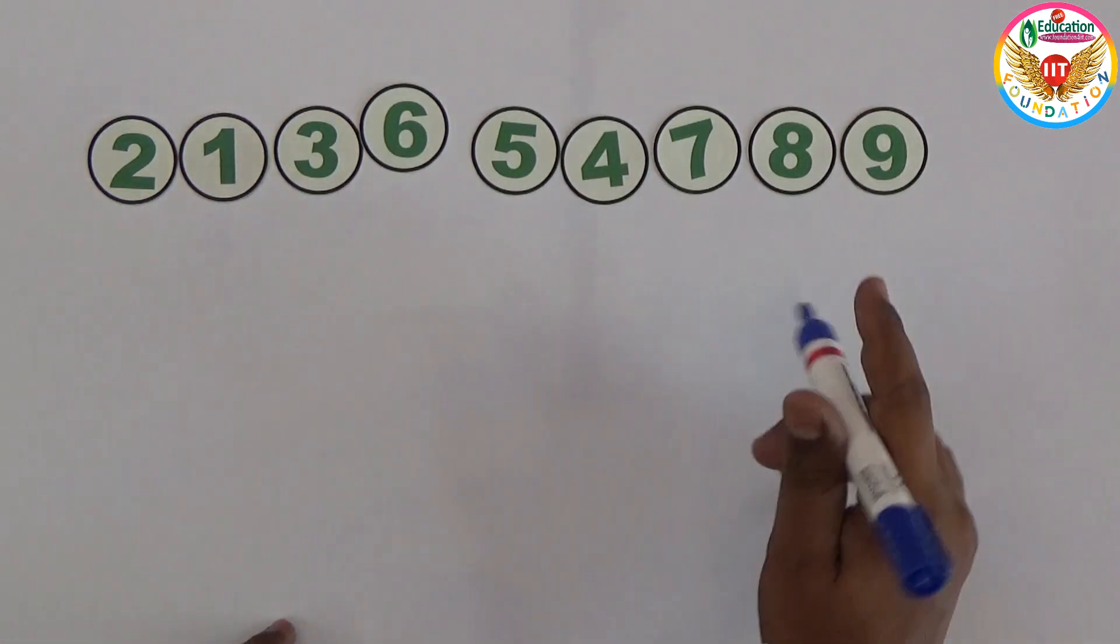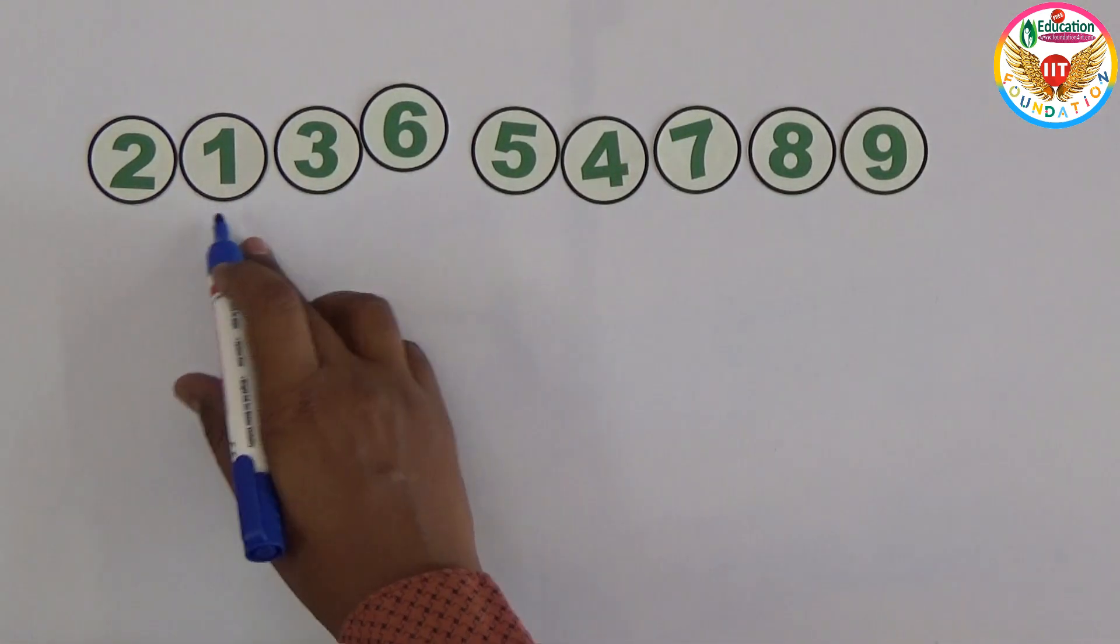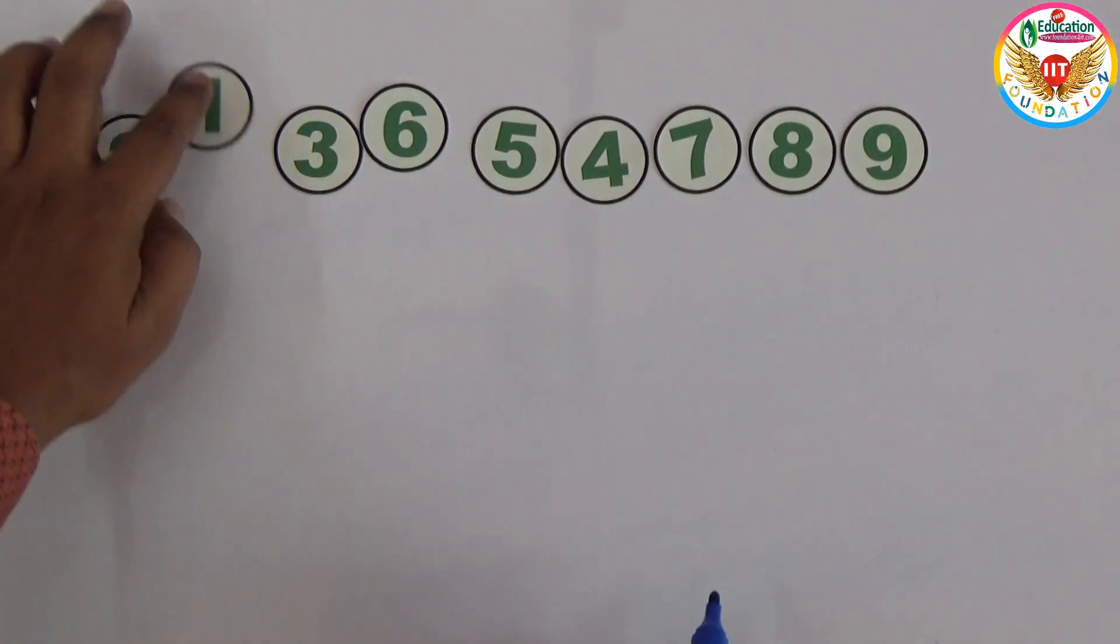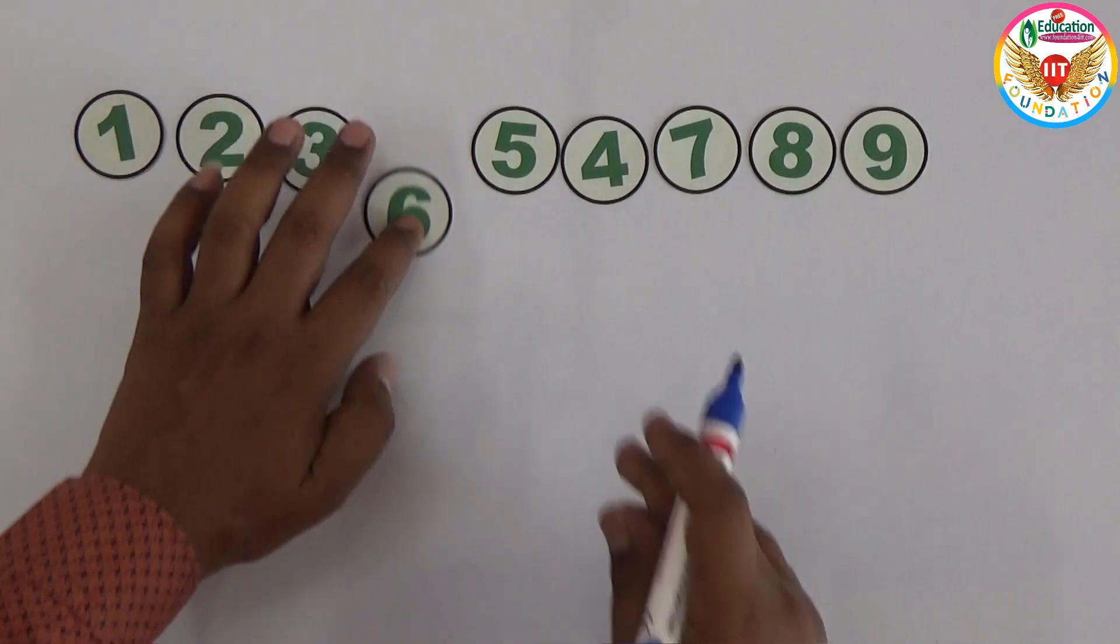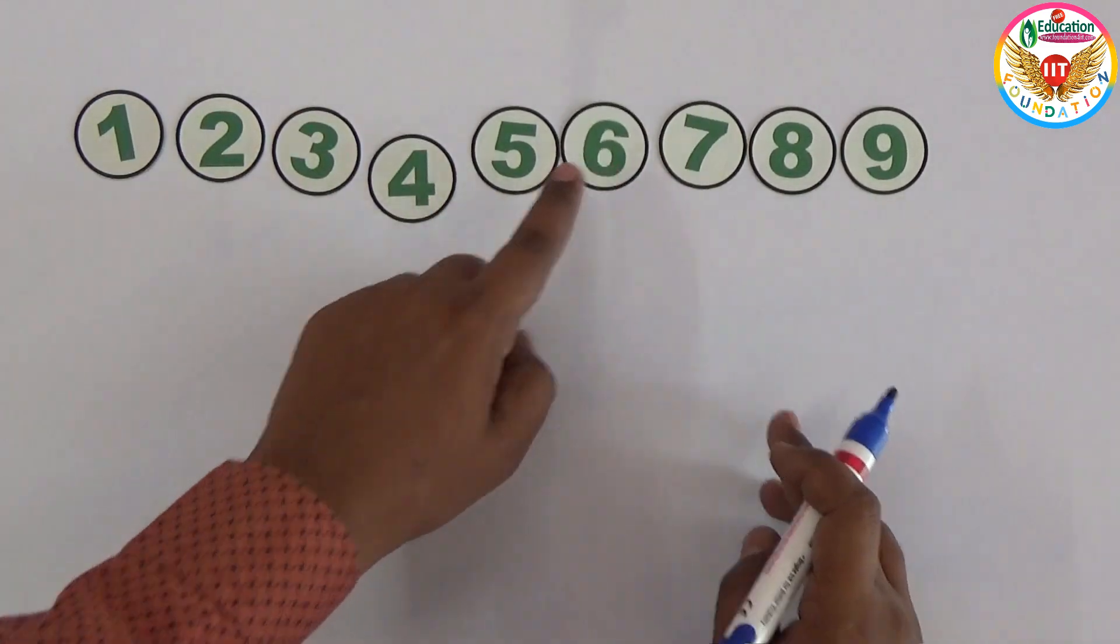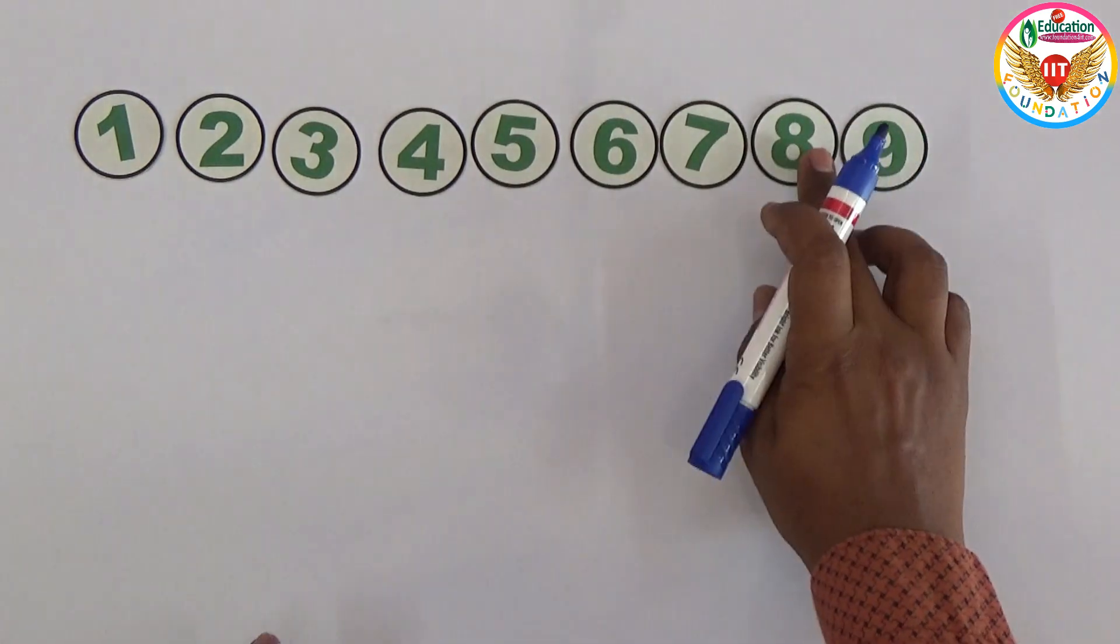The number is changing. Previously it was one number, now this is 21 crore 36 lakh 54,789. By how many counters can we change to make exactly a perfect square? Let me show an example.